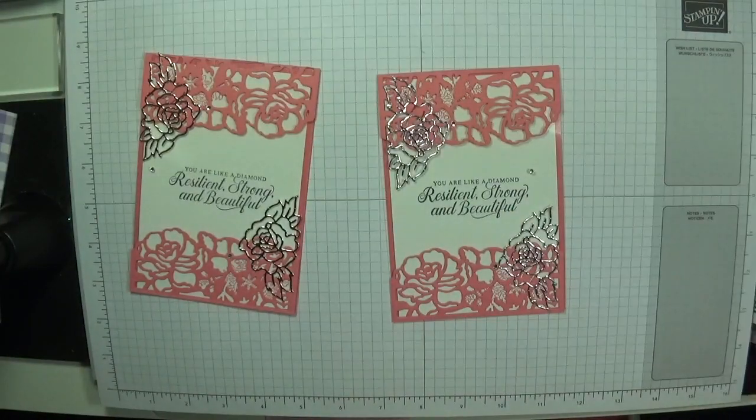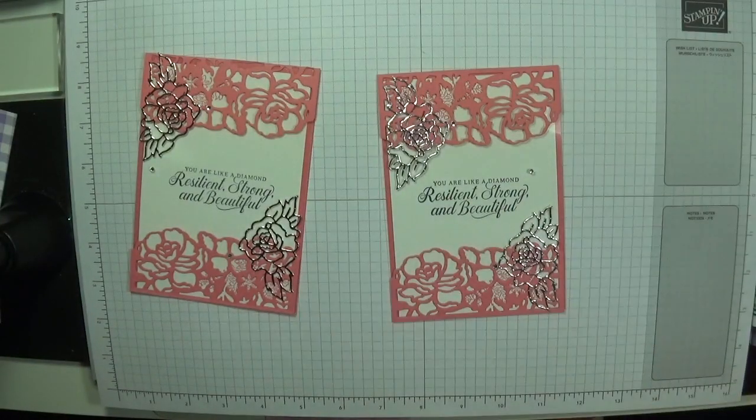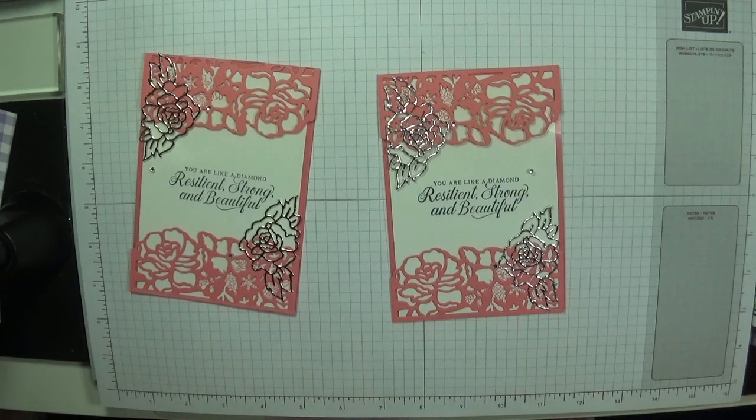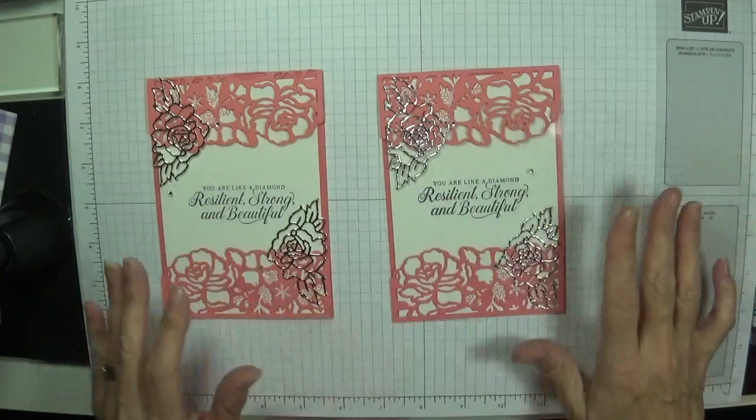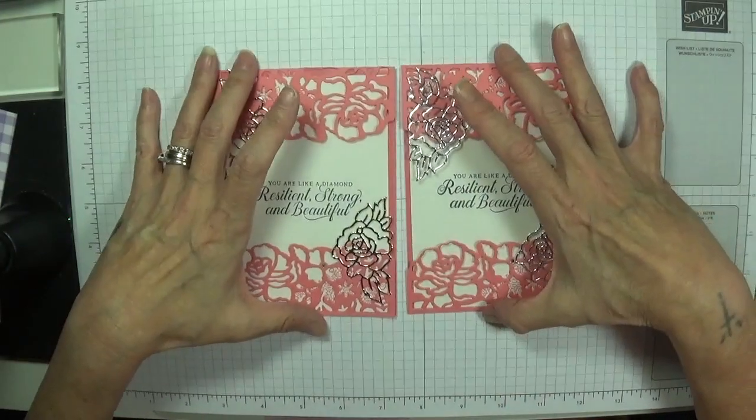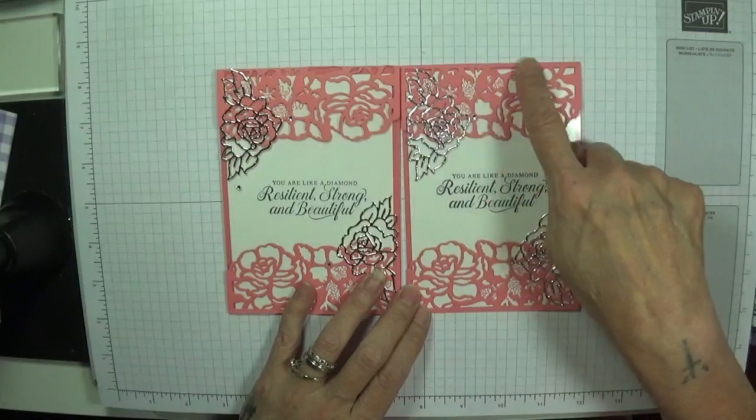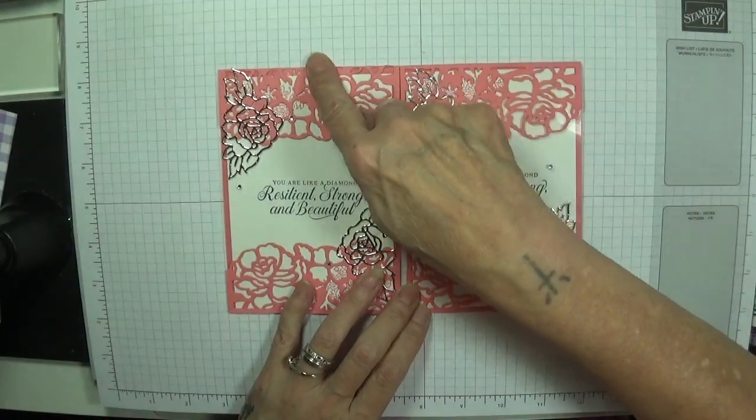I'm going to pop one in the center of that flower and this flower, and then I'm just going to have one here this time. Isn't that beautiful? This is like a champagne color and this is with silver. You could add gold, copper, anything. The Flirty Flamingo and the grapefruit grove and the lovely lipstick would look nice on there.